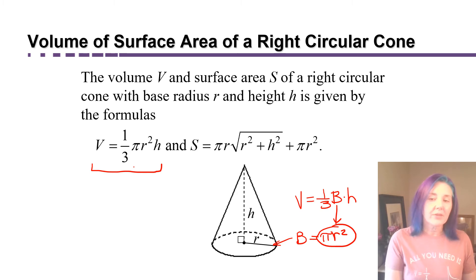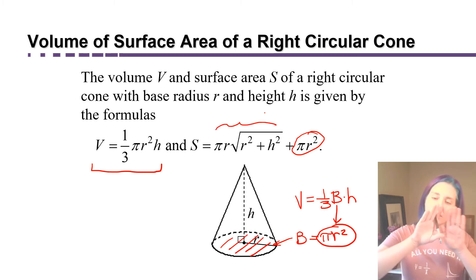Now the surface area, I'm not going to go into where this formula comes from in much detail, but I will tell you this. The pi r squared is just the area of the base down here. So the rest of this is the area around like the walls of the cone.